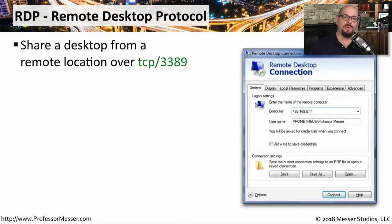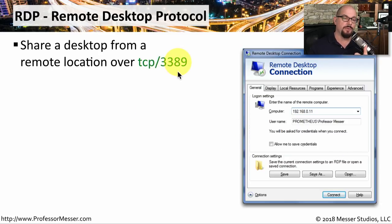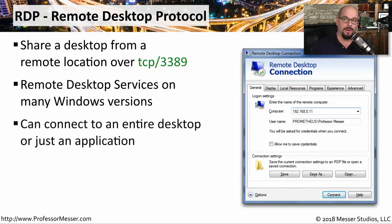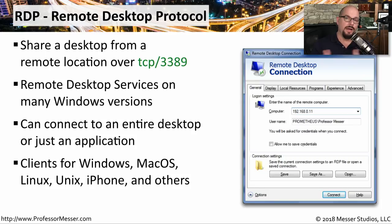If you work in a help desk or do any type of remote administration of devices, you're probably familiar with RDP, or the Remote Desktop Protocol. This allows you to see the screen on a remote device and share the keyboard and mouse on that device using TCP over port number 3389. It's common to see remote desktop being used on many types of Windows operating systems. RDP allows you to connect to the entire desktop or simply to an application available on that device. There are also remote desktop clients available for other operating systems, so you can use Mac OS or Linux to remotely connect and administer Windows devices using RDP.